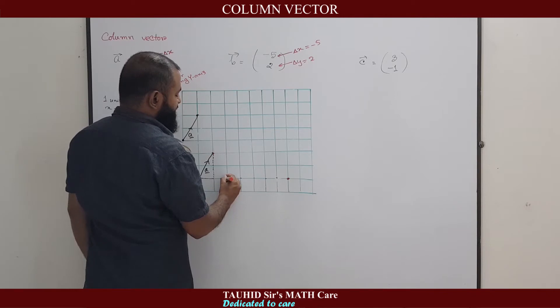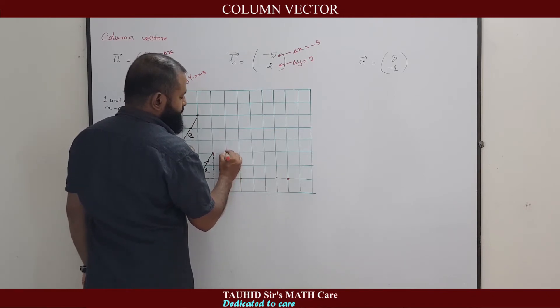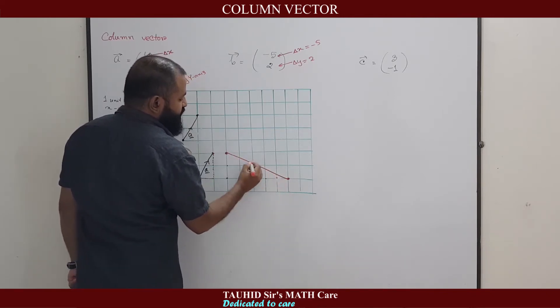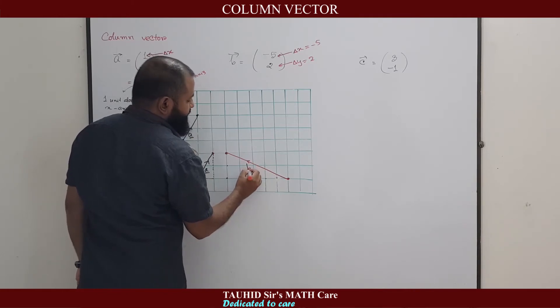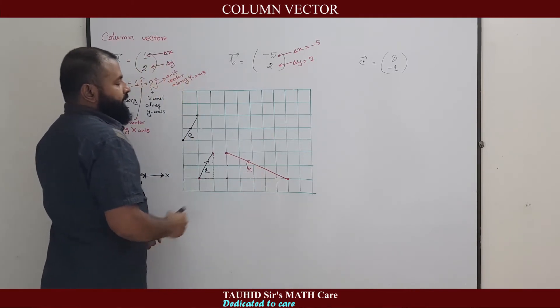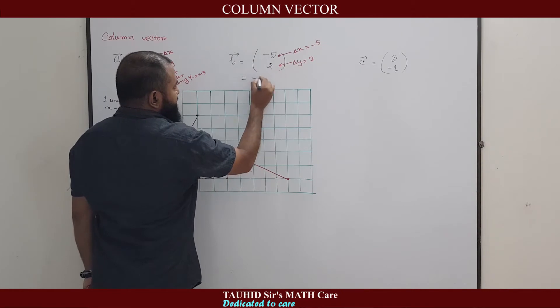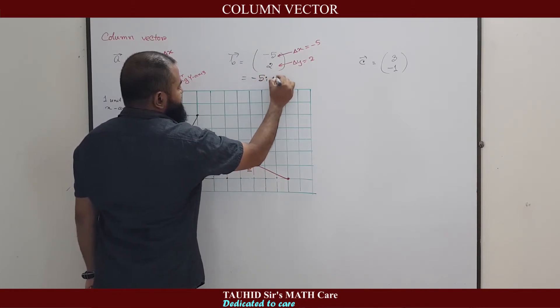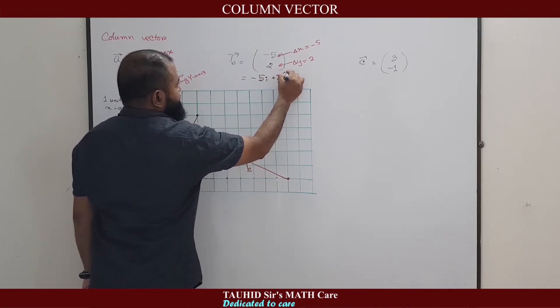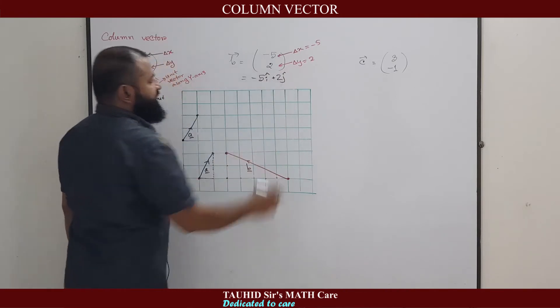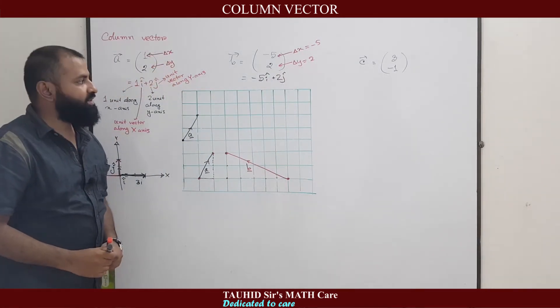And delta y is 2. That means two units upward: 1, 2. Therefore, our b vector will be this. And it can also be written as minus 5i plus 2j, where i and j are unit vectors along x-axis and y-axis.